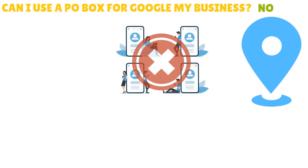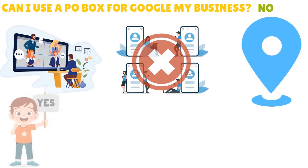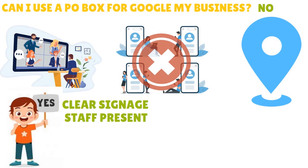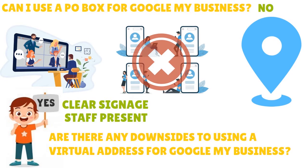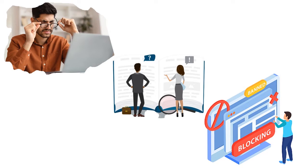A lot of people are confused about virtual offices — can they use a virtual office for Google Business? Yes, the answer is yes. Google My Business accepts virtual offices, not a problem. But the virtual office must meet certain criteria such as having clear signage and staff present during listed hours. However, if not managed properly, using a virtual address for Google My Business can lead to skepticism from Google and potential violations of guidelines, impacting the business's legitimacy — and they will either ban you or shadow ban you.